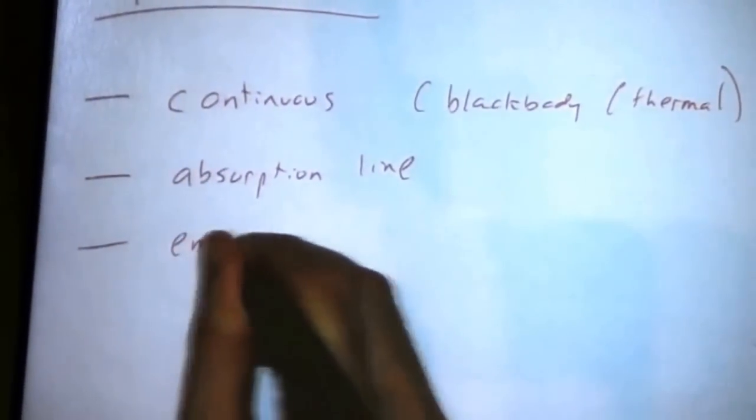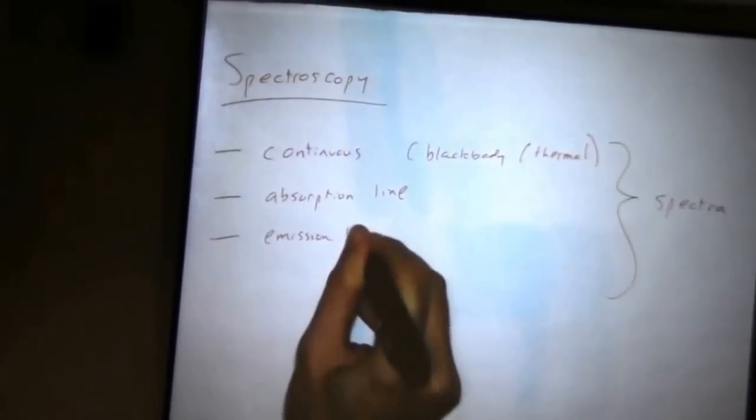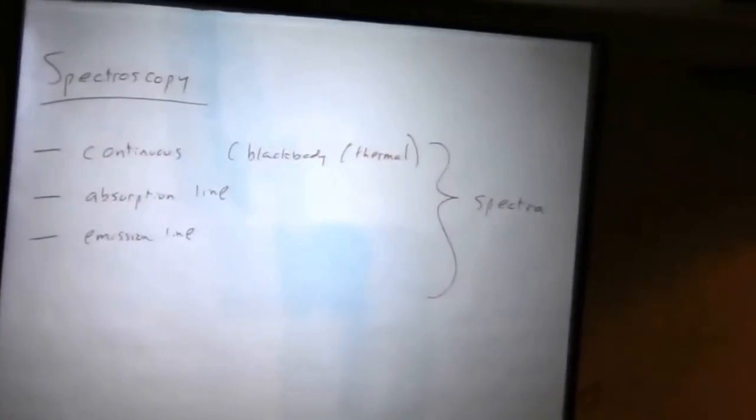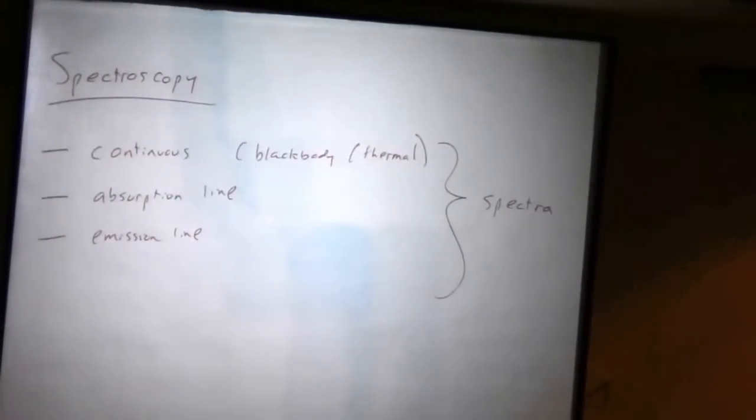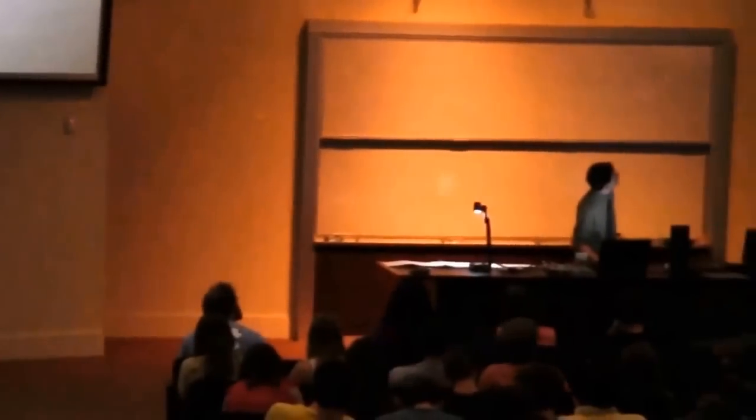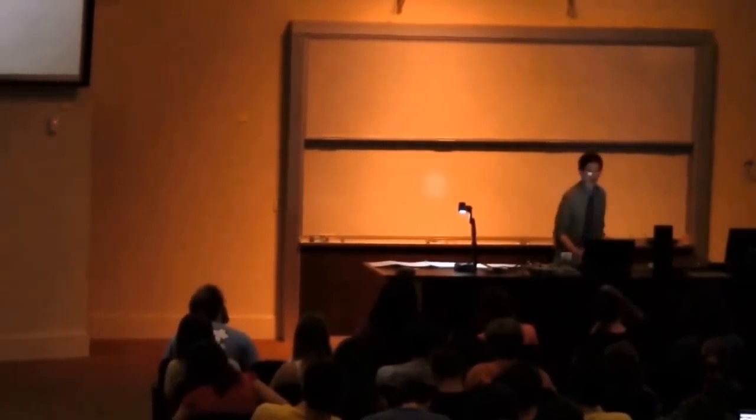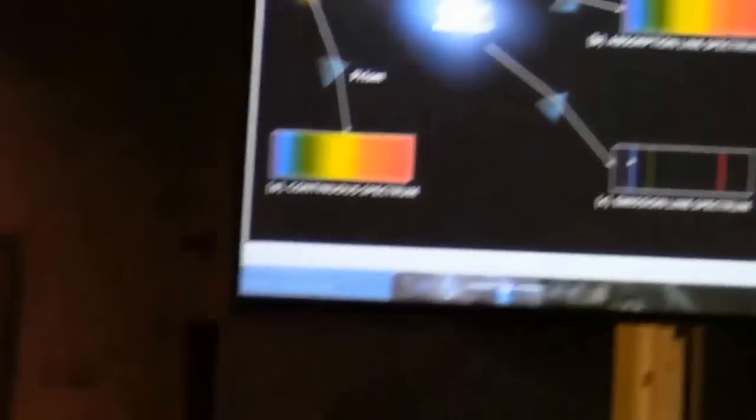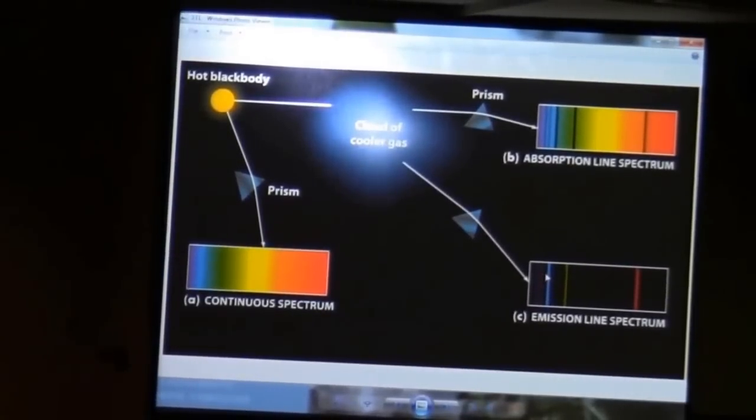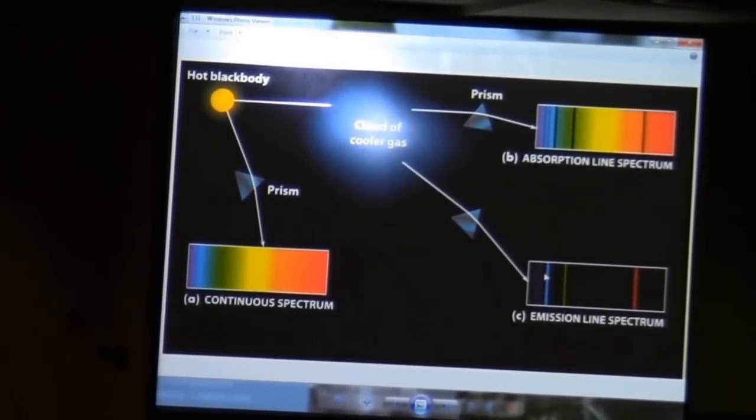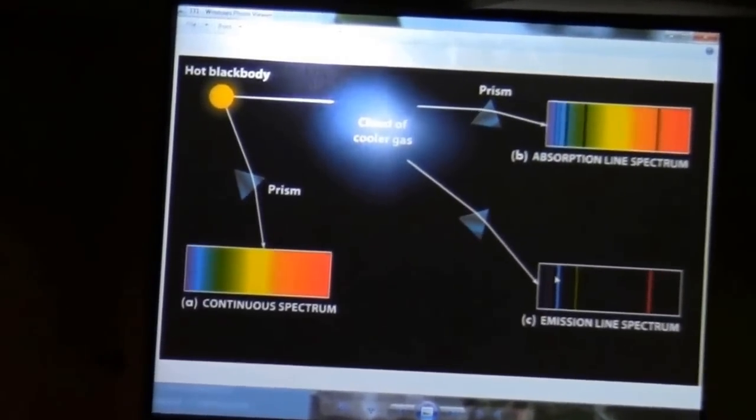Then you have emission line. If I were to look at this cloud of gas from a different angle, an angle whose line of sight does not intersect the star. So let's say we're down here, and we're looking out. We're not looking at the star anymore. The star is off on the side. So we're not getting the continuous spectrum. But that cloud of gas is emitting light. But the light is only at particular wavelengths, and we call that an emission line spectrum.